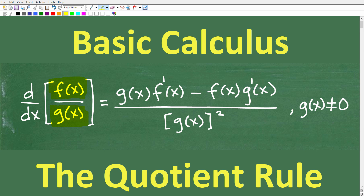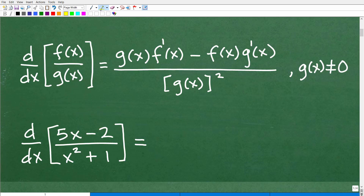We have to apply the quotient rule, and this is the quotient rule right here. For those of you already in a calculus course, you can kind of read this and hopefully be able to interpret it. I'm going to explain this all in just one second. And if this video helps you out, don't forget to like and subscribe. So let's say I want to find the first derivative of this expression right here.